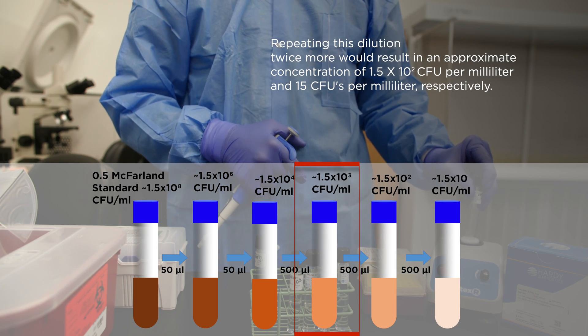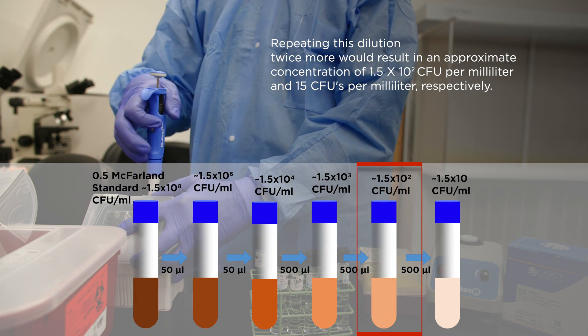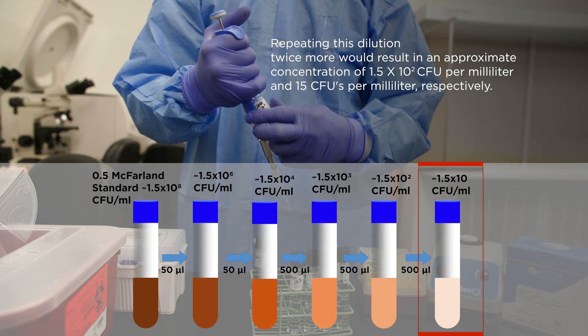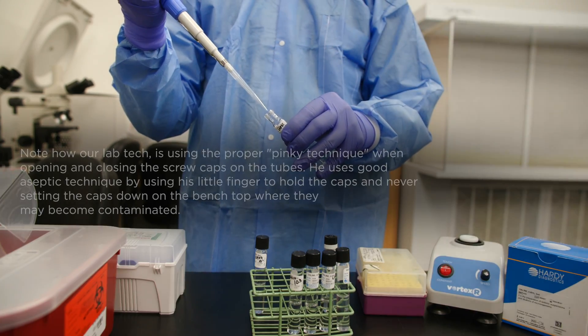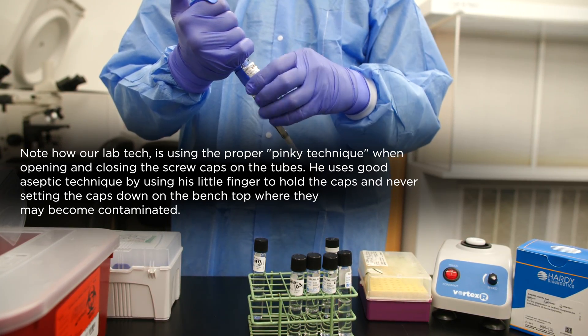Repeating this dilution twice more would result in an approximate concentration of 1.5 times 10 to the 2nd CFUs per milliliter and 15 CFUs per milliliter respectively. In this way, you can reach the desired bacterial concentrations using this dilution method.